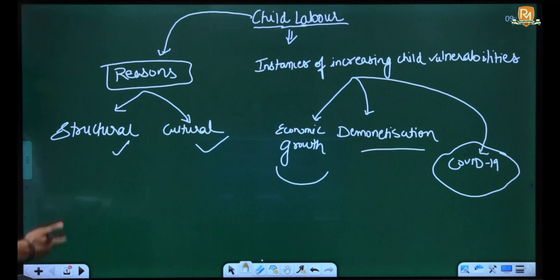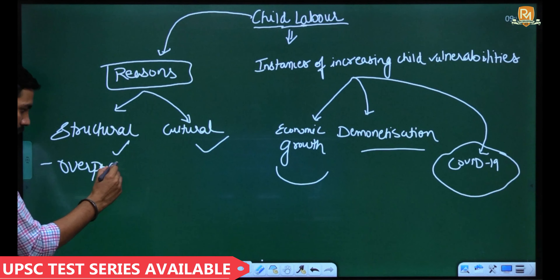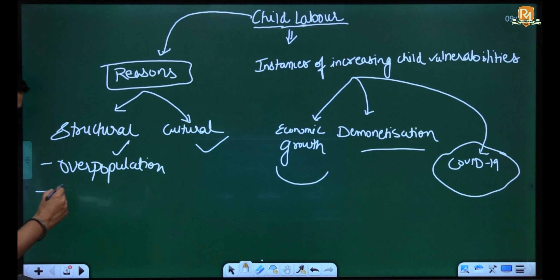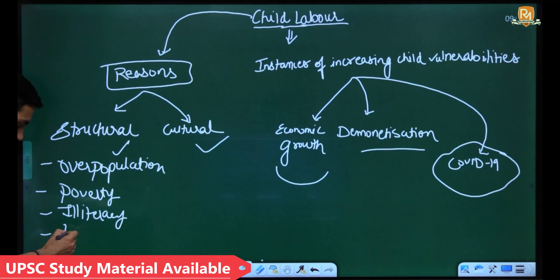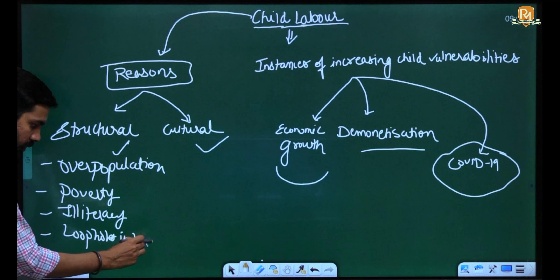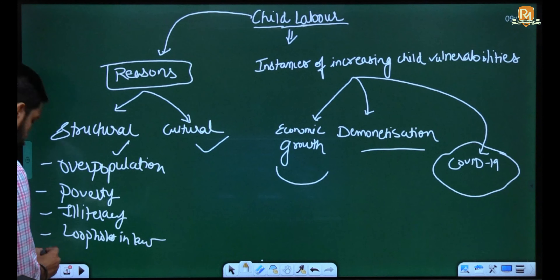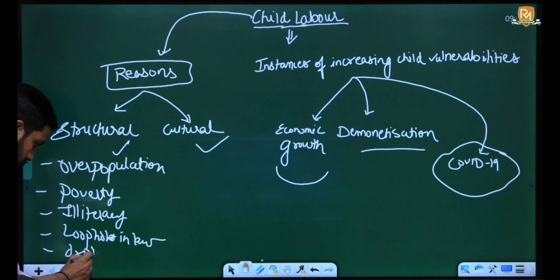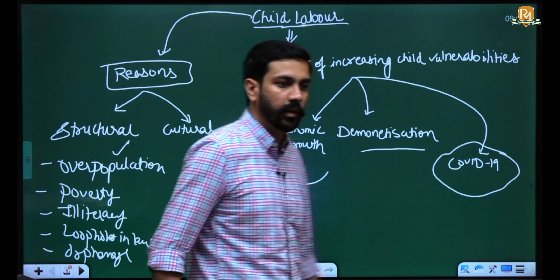With respect to structural factors prevalent within Indian society, the key ones are: overpopulation, poverty, illiteracy, loopholes in law, lack of prosecution, and orphanage. These are all structural factors basically responsible for the prevalence of child labor within society.